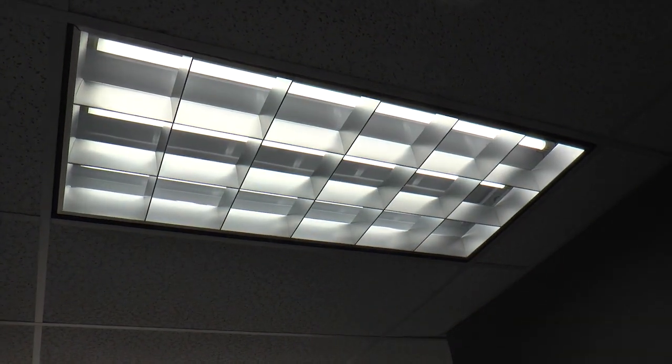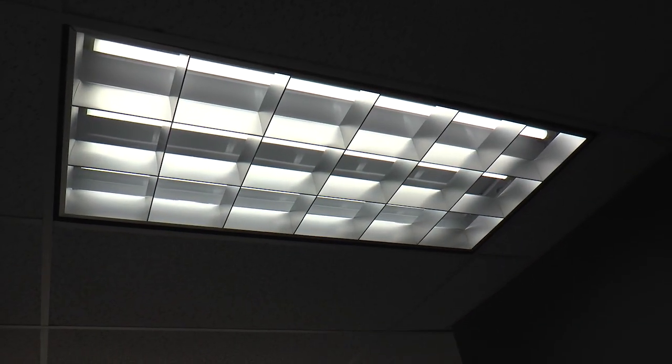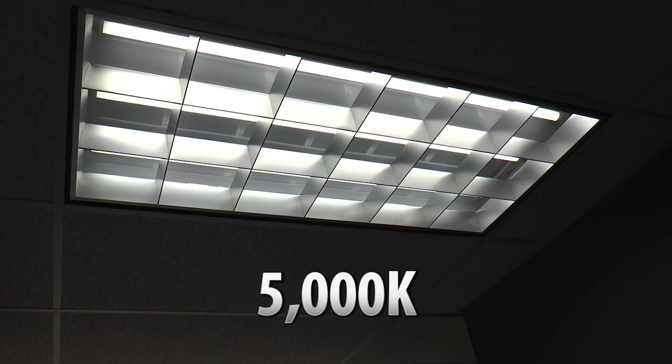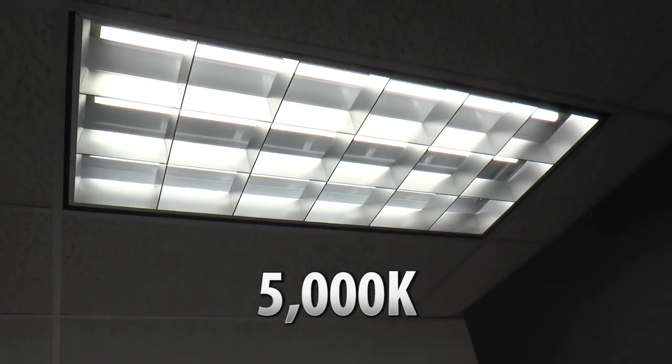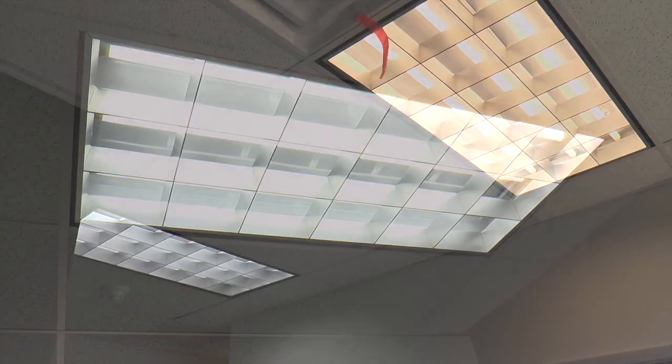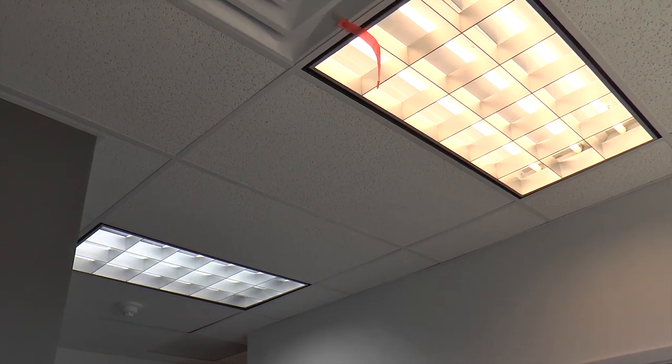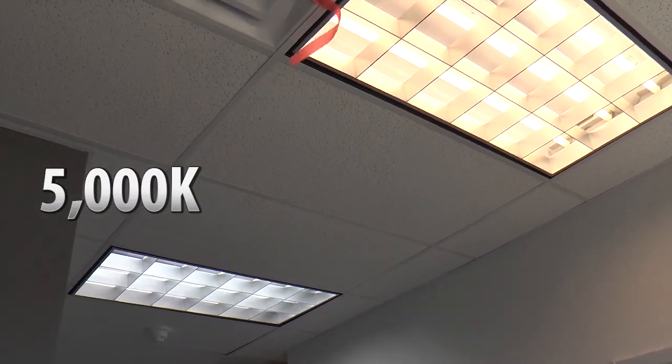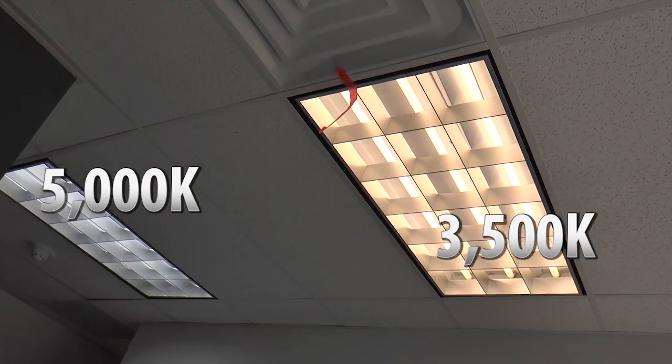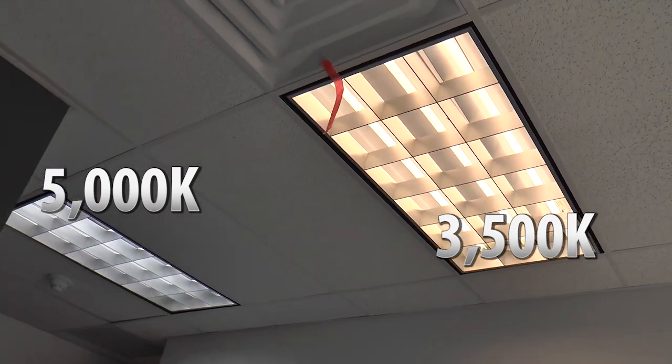Now on this light, we used a higher color temperature. This is around 5000 degrees K, produces a really nice white light. And in the space that we're in right now, we have the 5000 K and we have a 3500 K right next to it. So you can see the color of both of them.